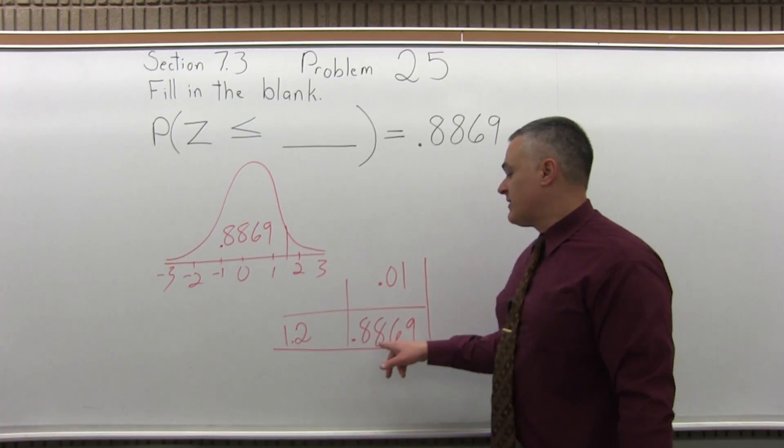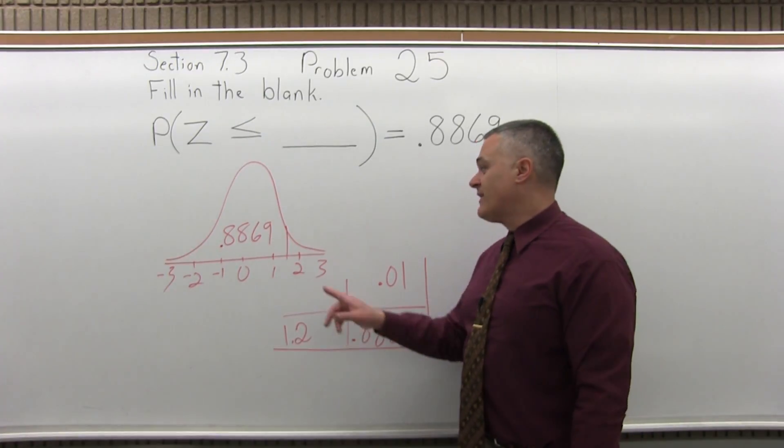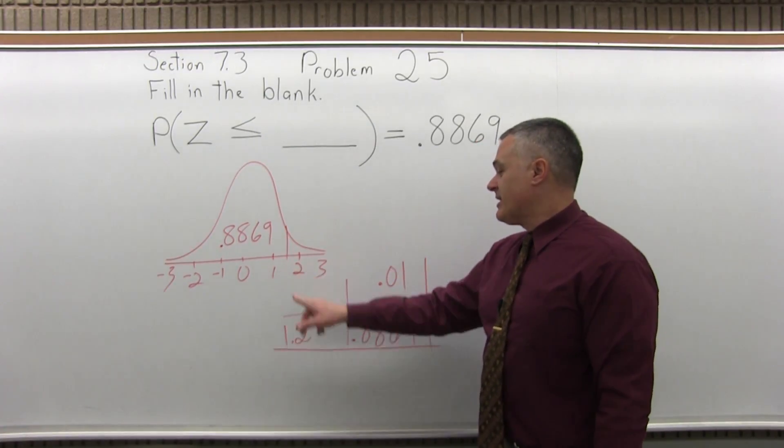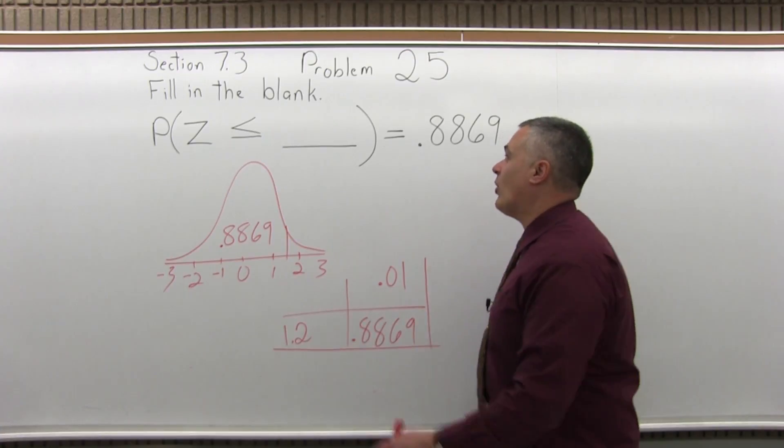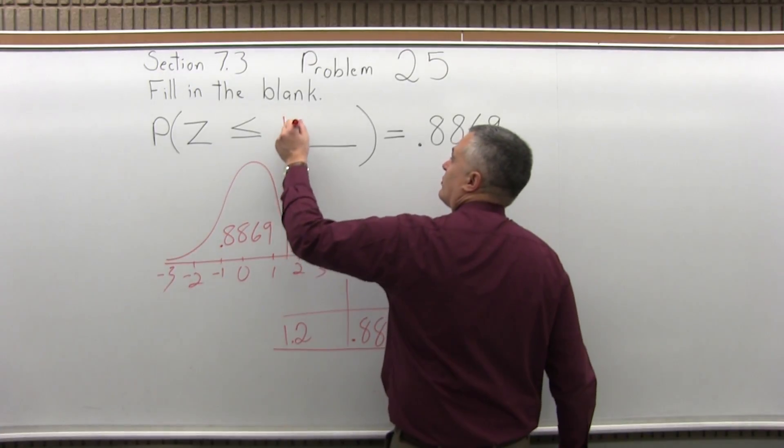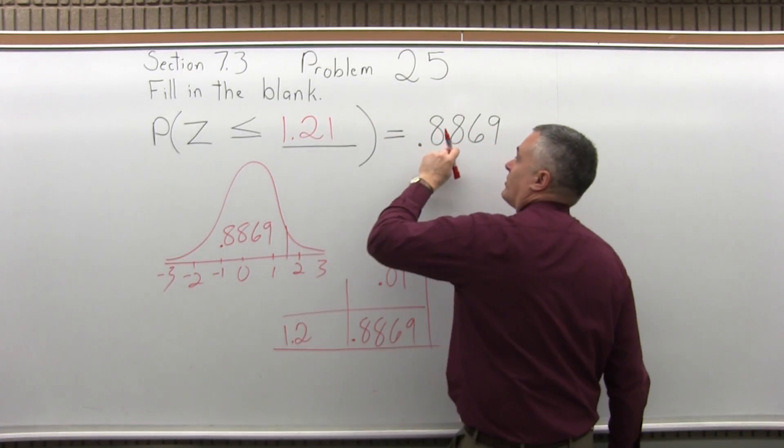That's what you would look up to find the .8869. So the value from the bottom part of that bell curve would be 1.21. That's what you looked up to get an answer of .8869.